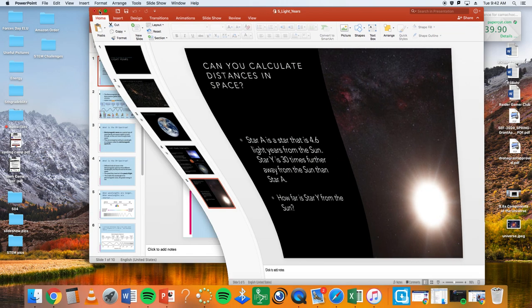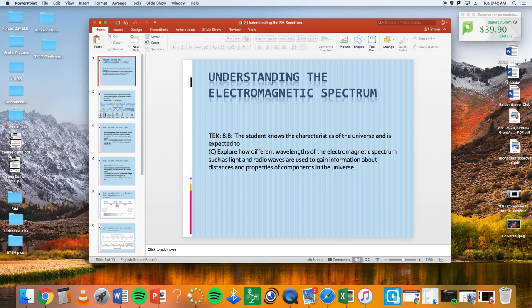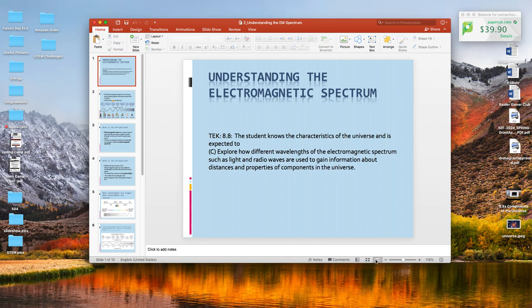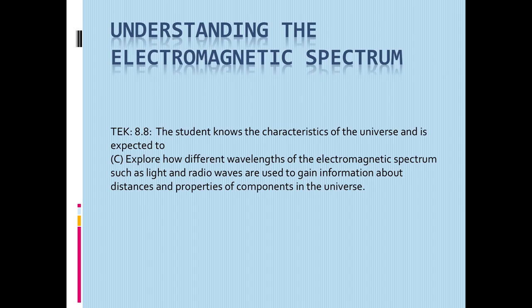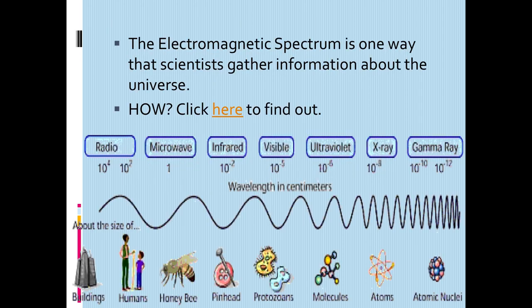Now we're going to jump into the second half, which is the EM spectrum. We're exploring how the different wavelengths of the EM spectrum can be used to gain information about our universe. The EM spectrum is one way that scientists gather information about the universe.